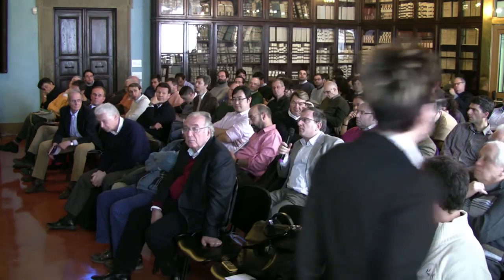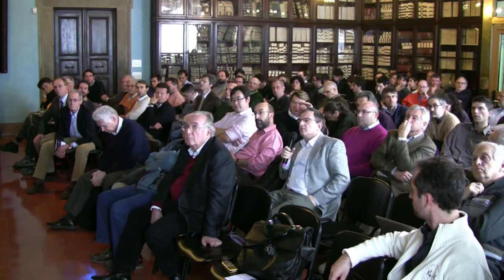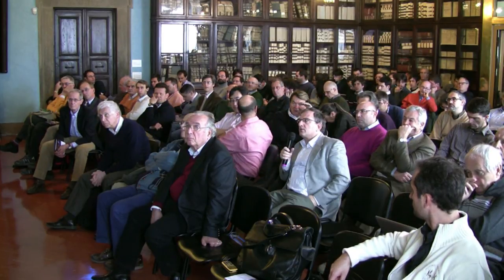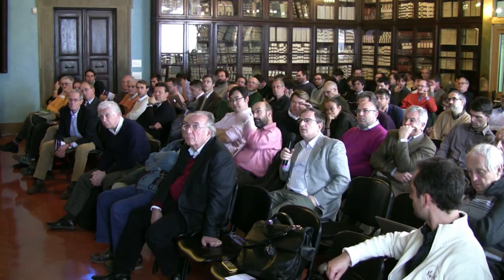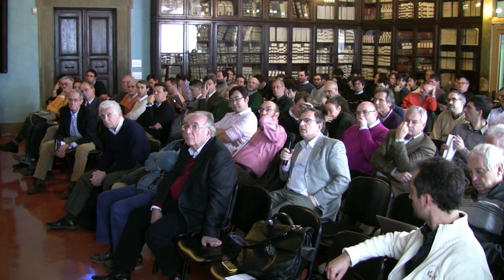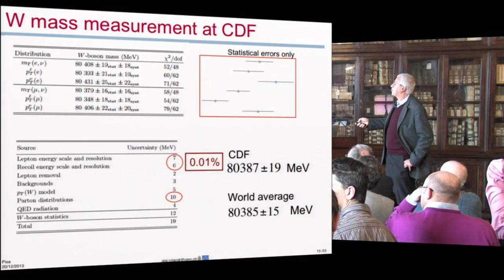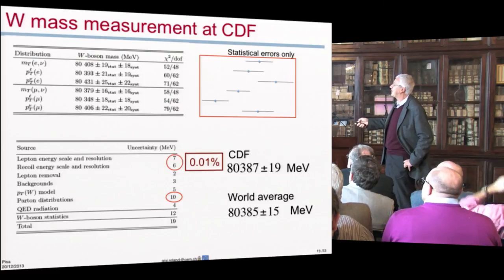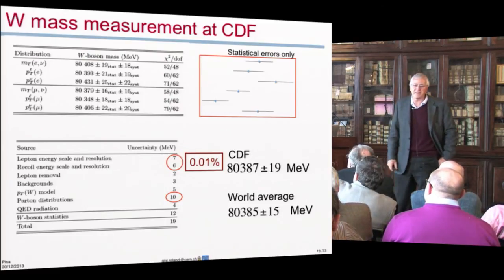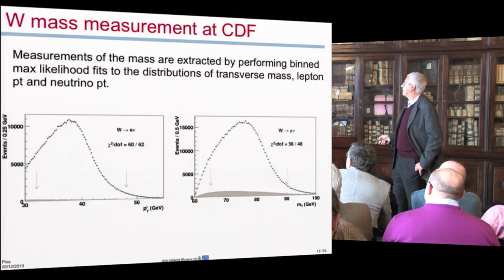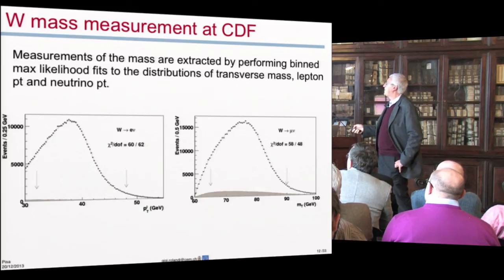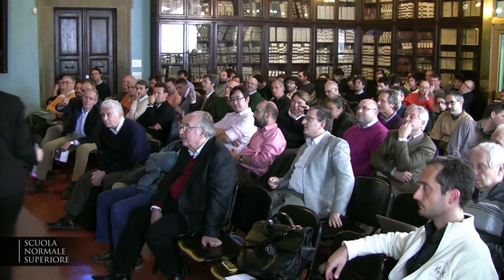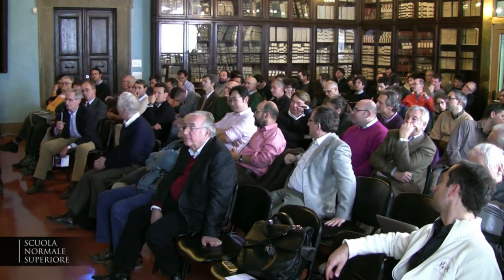Just a curiosity. In the W mass measurement driven by CDF, is the error driven by the measurement in the muon decay or in the electron decay? You see it from here. The most precise is the transverse mass of the muon, that has a statistical error of 16 MeV. The less precise is the spectrum of pT of the neutrino in the events with an electron, and the difference between the two is 50%. But in the previous slides, if I saw correctly, the chi-square of the electrons was 60 over 62, 58 over 48. It's a fantastic fit.